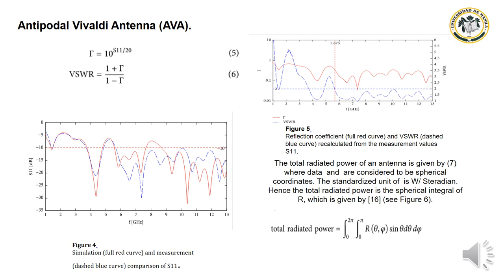The total radiated power of an antenna is given by a formula where data are considered to be in spherical coordinates. The standardized unit is steradians, and the total radiated power is the spherical integral of R, as given by equation 16.